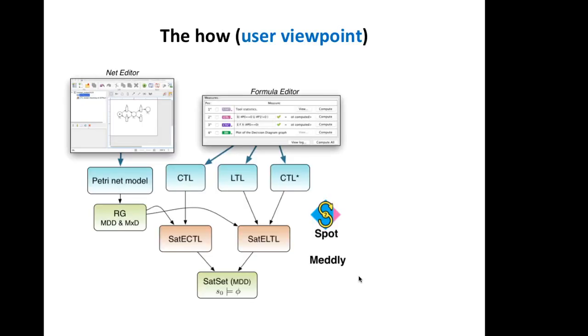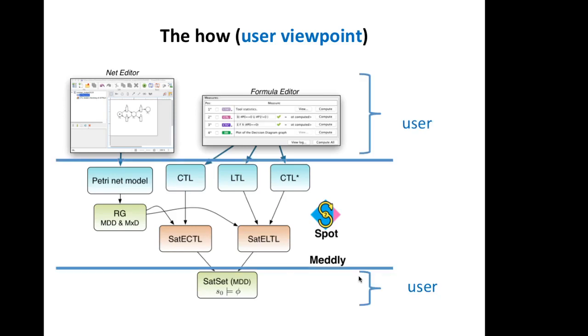So, let's see how it works. From a user viewpoint, there is the Net Editor and the Formula Editor, and the interface to compute the results. The new tool extends an existing CTL model checker, adding LTL and CTL*. It uses SPOT for automata translation and Meddly for set encoding.